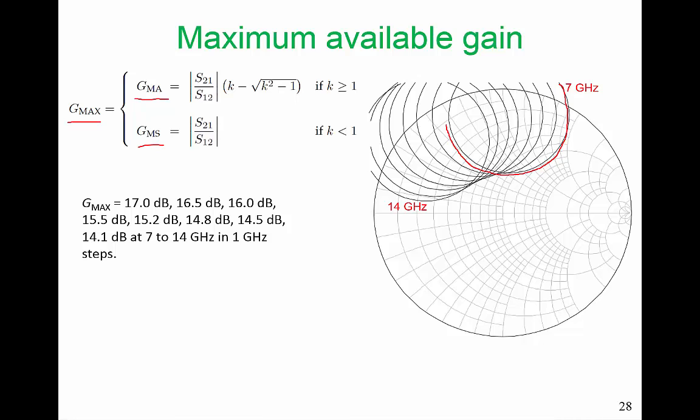Remember, our design target is 14 dB, so we have plenty of room to trade off here. When we go up to 14 GHz, we're at 14.1 dB. That's a little bit outside our range. This is 12 GHz. We have 14.8 dB of maximum available gain, and so we have a very small trade-off that we need to make.